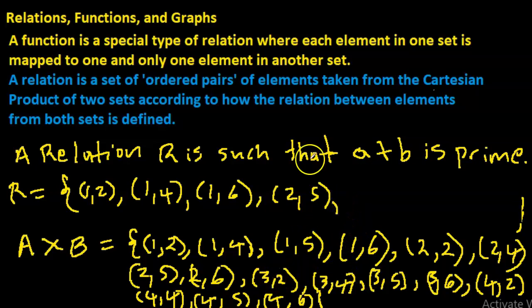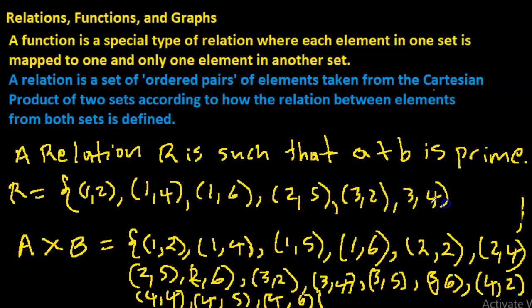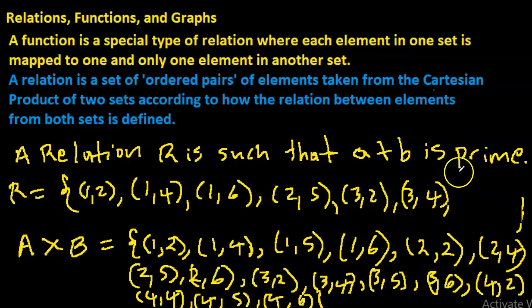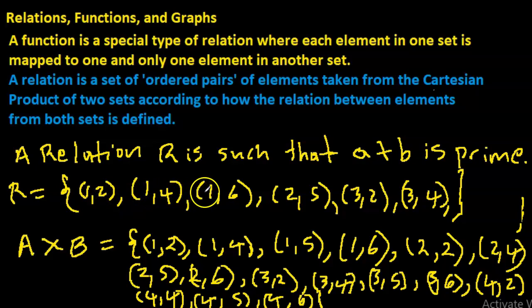What if R is defined such that a plus b is prime? We take all pairs where the sum is a prime number. One-two gives three (prime). One-six gives seven (prime). Two-five gives seven (prime). Two-six gives eight (not prime, excluded). Three-two gives five (prime). Three-four gives seven (prime). Three-six and four-two also qualify. For each pair, the sum of a plus b is a prime number.